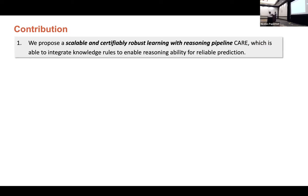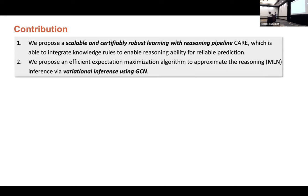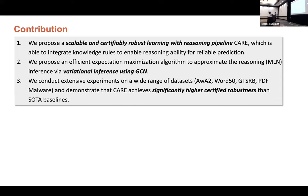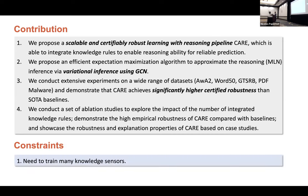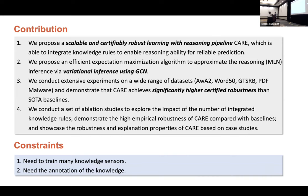So let's conclude our contribution. We propose a scalable and certifiable robust learning with reasoning pipeline. And we derive the ELBO, derive the EM step, and we approximate the inference for variational inference using GCN. And we show that with additional knowledge, we can obtain significantly higher certified robustness. And we also conduct a series of ablation studies to show the difference between our method and ensemble. But of course there are some constraints in our methods. Like first we need to train many knowledge sensors. And another constraint is that we must have the annotation of the knowledge.